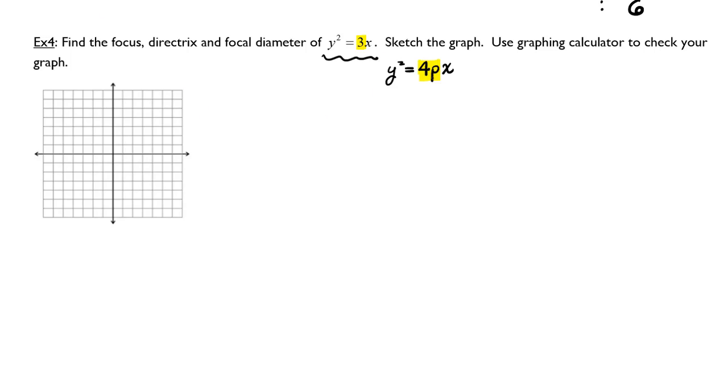And so I'm going to use that information to solve for p. If I know that 3 is replacing 4p, I can set them equal to each other and solve for p. This gives me p is equal to 3 fourths.